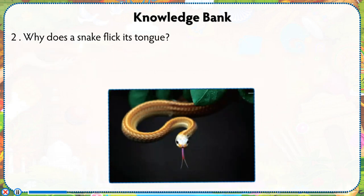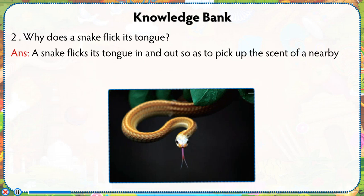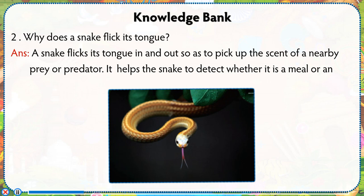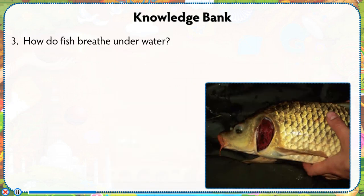Why does a snake flick its tongue? A snake flicks its tongue in and out so as to pick up the scent of a nearby prey or predator. It helps the snake to detect whether it is a meal or an enemy.